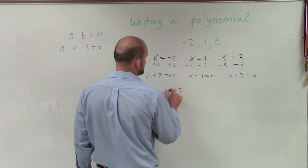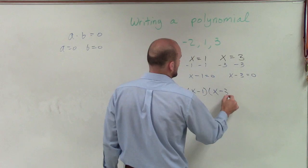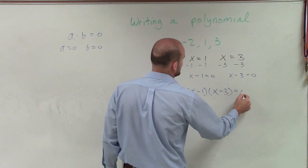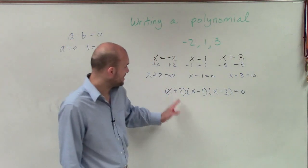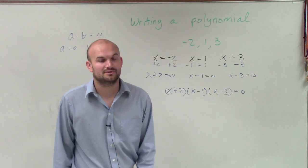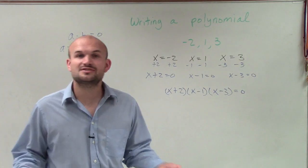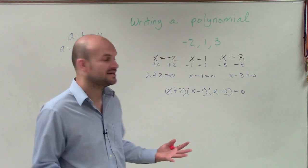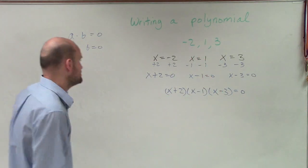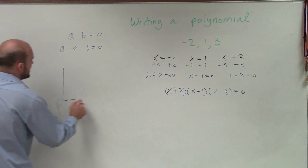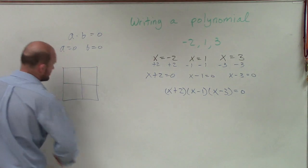Since they're factors, we can write them as a product of each other, all equal to 0: x plus 2 times x minus 1 times x minus 3 equals 0. Now we're going to have a little fun, because we have a binomial times a binomial times a binomial. The best way I like to approach this is just do one at a time, using the box method to keep everything as organized as possible.